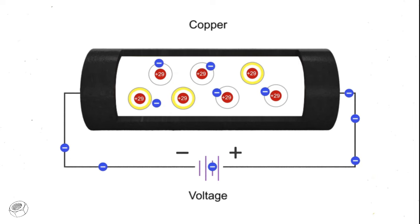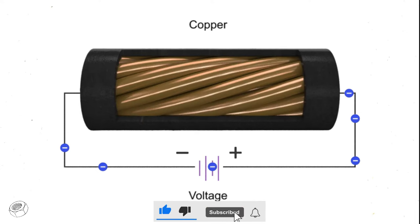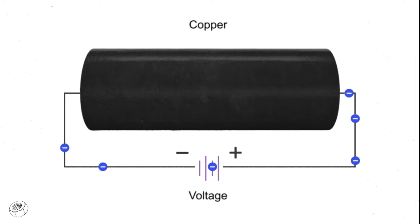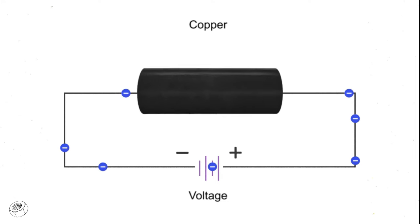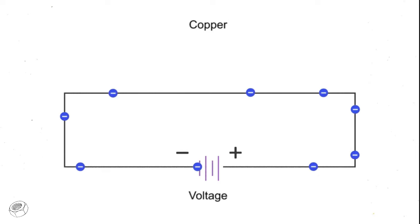Materials that have free electrons and allow electrical current to flow easily are called conductors. Conductors, such as copper, have low resistance to electrical current flow and thus are used extensively in electrical circuits.